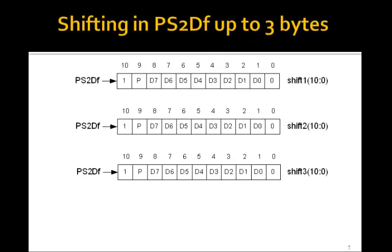We're going to shift in up to three bytes, because some of the make codes or break codes can have up to three bytes. We'll shift the data in most-significant bit first, so this would be the start bit, followed by eight data bits, followed by the parity bit, followed by the stop bit. So when you press a key, 11 bits get sent out the PS2 port.